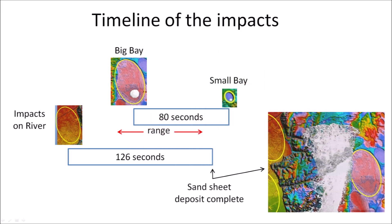The time between the formation of Big Bay and the Small Bay is 80 seconds. The time to deposit a sand sheet moving at 200 km/h after some impacts on the Watery River is 126 seconds. From these times, we can see that the emplacement of Big Bay has to take place at least 46 seconds after the impacts on the river — otherwise the Small Bay will be covered by the sand sheet. Also, Big Bay cannot be emplaced more than 126 seconds after the impacts on the river, or it will not be covered by the sand sheet. The result is a carefully choreographed ballistic and aeolian deposition lasting approximately 146 to 176 seconds — an interval of less than 3 minutes.